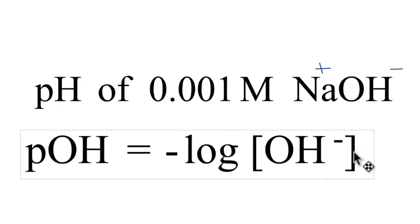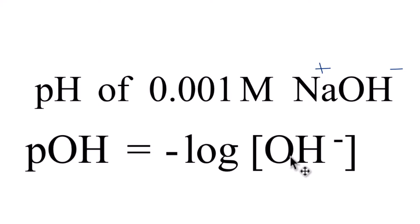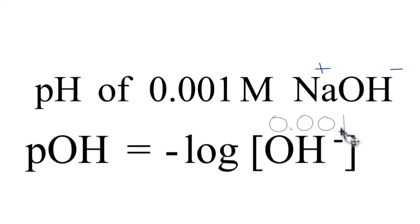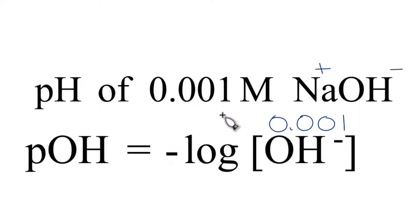That's pOH. pOH equals the negative log of the concentration of the hydroxide ion. So we have 0.001 — we put that in here. The log of 0.001 is negative 3, and then we put our negative in front of that. The negatives cancel out, so we end up with a pOH of 3 for the 0.001 molar solution of sodium hydroxide.